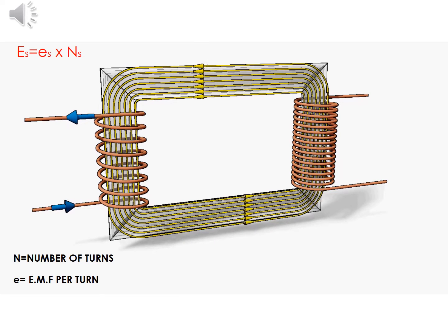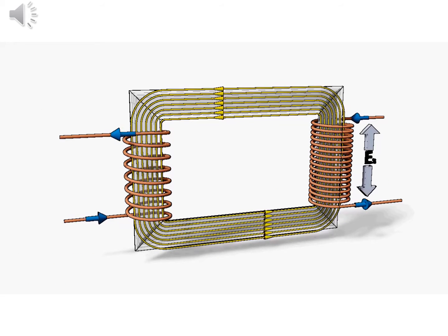This magnetic flux can be effectively linked to a secondary winding with the help of a core made up of ferromagnetic material. This fluctuating magnetic field will induce an EMF in the secondary coils due to electromagnetic induction.